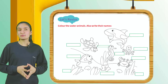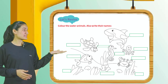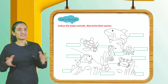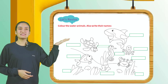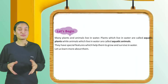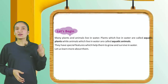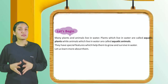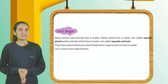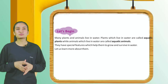Color the water animals and also write their names. Here you can see some animals — color them beautifully and write their names. Now let's begin. Many plants and animals live in water. Plants which live in water are called aquatic plants, while animals which live in water are called aquatic animals.